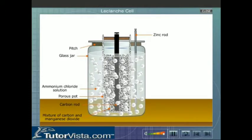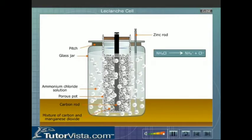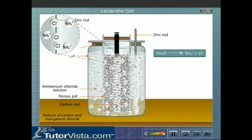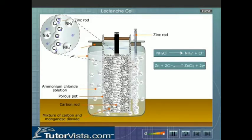Ammonium chloride, the electrolyte, splits into ammonium and chloride ions. The chloride ions move towards the zinc rod and transfer their electrons to the zinc rod forming zinc chloride.